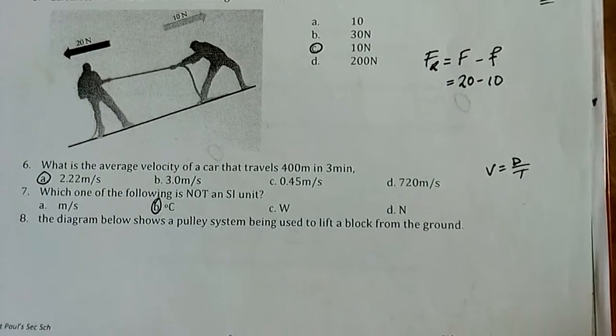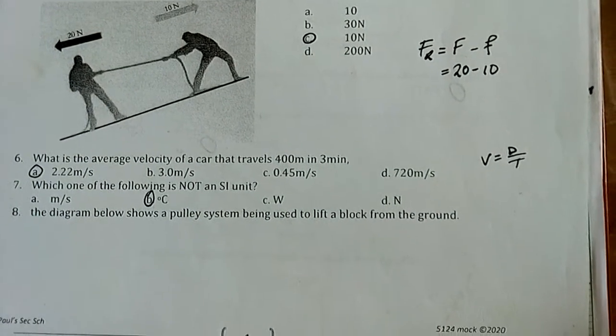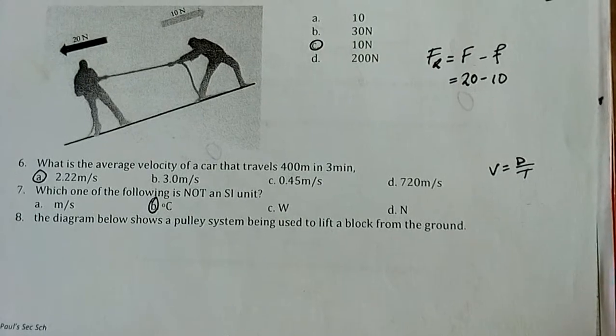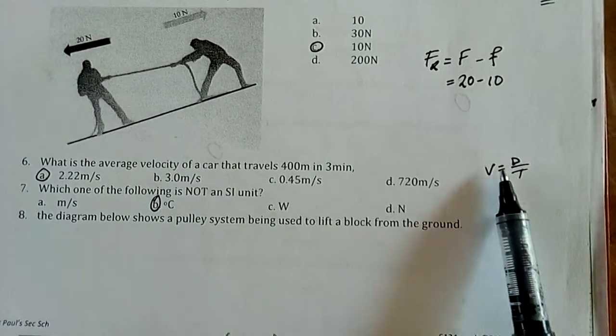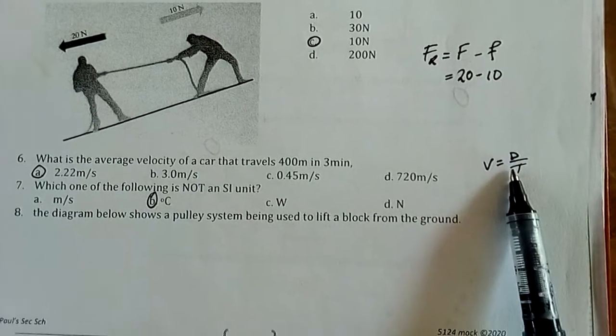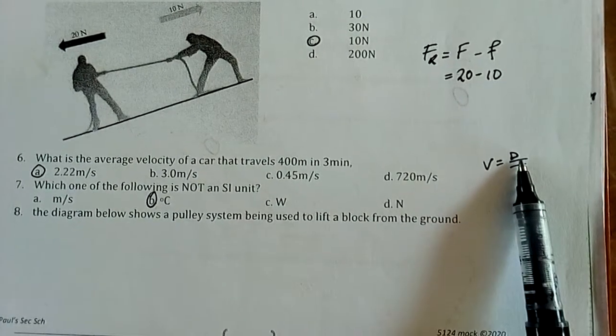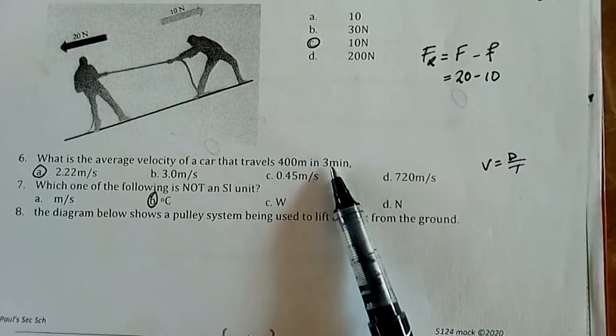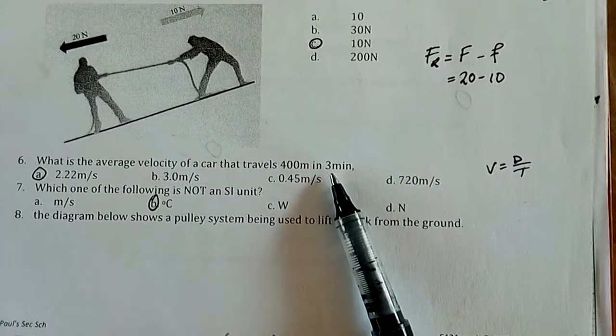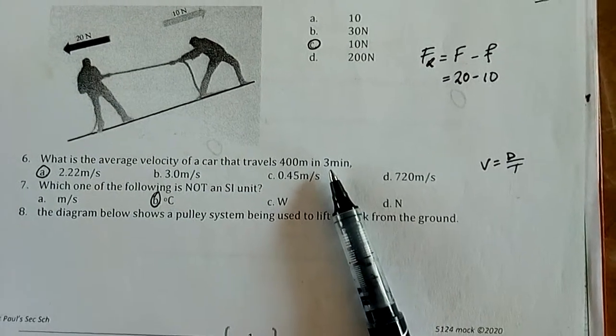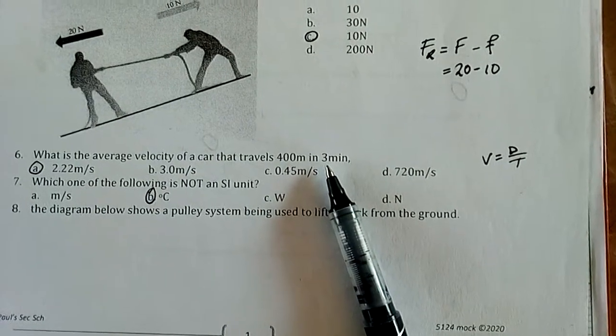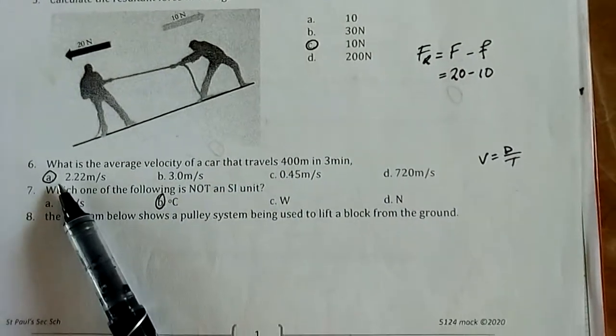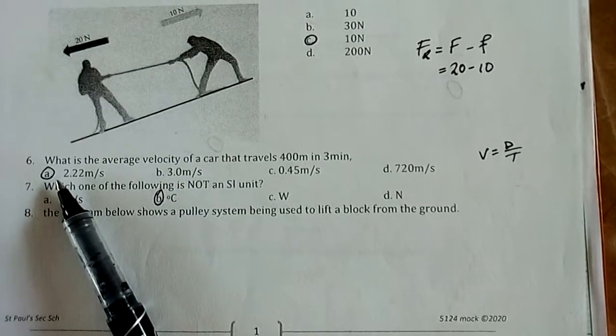Next question: What is the average velocity of a car that travels 400 meters in 3 minutes? Our formula is: average velocity equals distance over time. Therefore, it's 400 over 3 times 60, which gives 180 seconds. So 400 over 180 gives this value here, which is our average velocity.